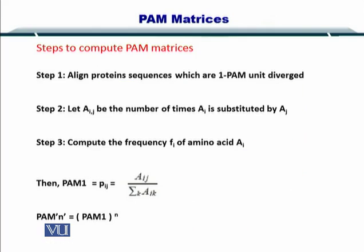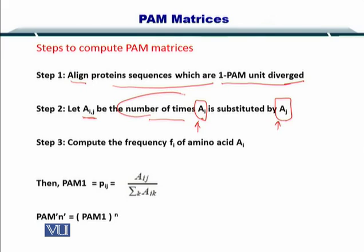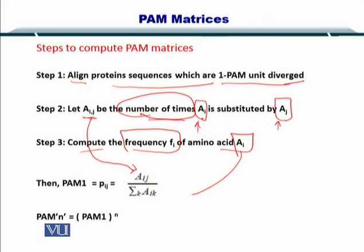To compute the PAM distance, the first thing you need to do is align protein sequences that are one PAM unit diverged — that is, they have about 1% mutations. A_ij is the number of times amino acid A_i is substituted by A_j. You also calculate the frequency of each amino acid A_i. You plug these values into the formula, where K equals 20 since there are 20 amino acids, and you sum the product of frequencies to obtain PAM1.